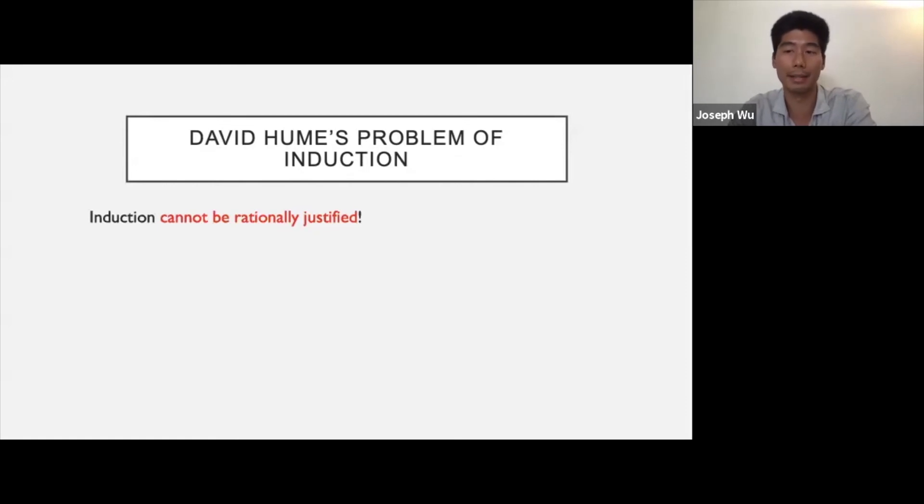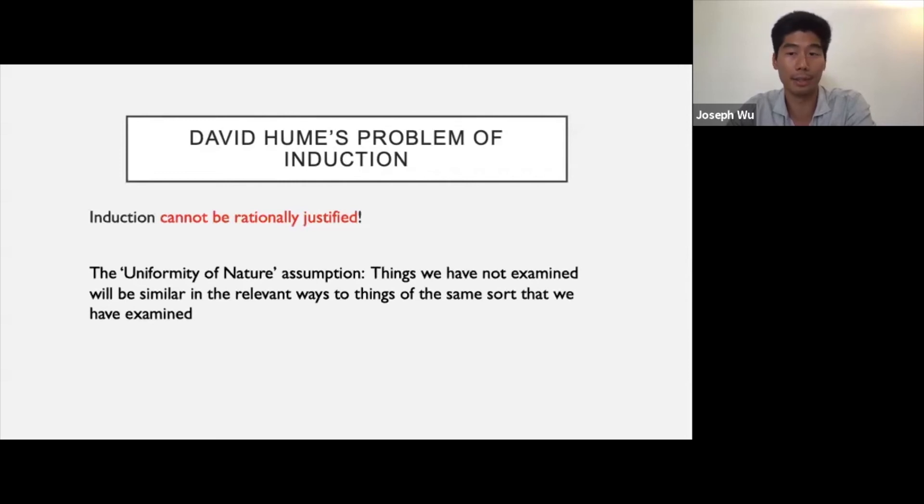Hume noted that whenever we make inductive inferences, we rely on an assumption he called the uniformity of nature assumption. To understand what he meant, recall our previous example in which I am confident my phone will not explode when I make a call. I justified this based on my past experiences. In this case, and as well as most all cases of induction, our reasoning depends on the assumption that things we have not examined will be similar in the relevant ways to things of the same sort that we have examined. Because my phone has not exploded in the past, I infer it will also not explode in the future.